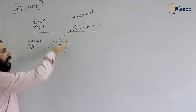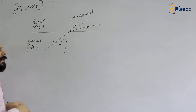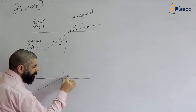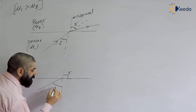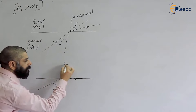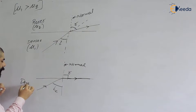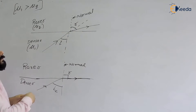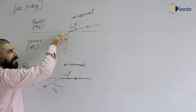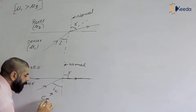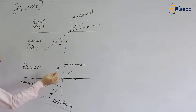If we further increase the angle of incidence, the light will bend more. At some particular angle of incidence, the angle of refraction becomes 90 degrees — that angle of incidence is called the critical angle. So again, in the denser medium, as we increase the angle of incidence from, say, 60 degrees to 75 degrees, at a certain point the angle of refraction becomes 90 degrees.